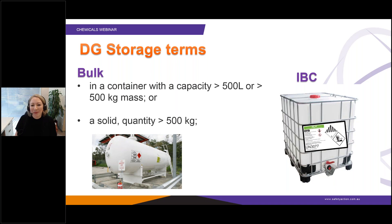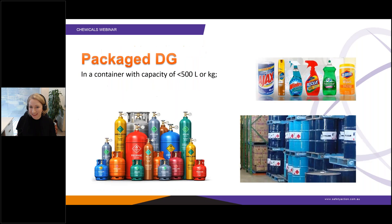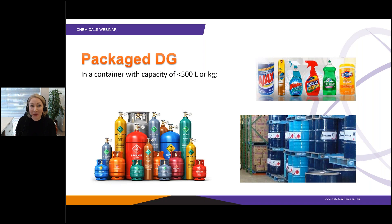IBC stands for intermediate bulk container — you can see one on screen. Packaged dangerous goods are those in a container with a capacity of less than 500 litres or kilograms. Common forms in the workplace include gas cylinders, chemicals in drums, or smaller containers of cleaning chemicals — if they're classed as dangerous goods, they'll be called packaged dangerous goods.